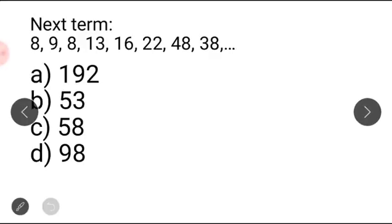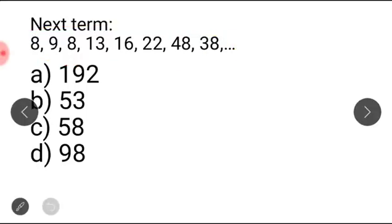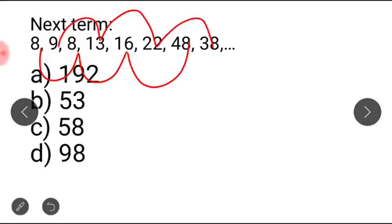The next question asks for the next term in the series: 8, 9, 8, 13, 16, 22, 48, 38. When there is no continuity in the series — no consistent increase or decrease — we assume it may be a mixed series. In a mixed series there will be a relation between all odd-positioned numbers and a separate relation between all even-positioned numbers.